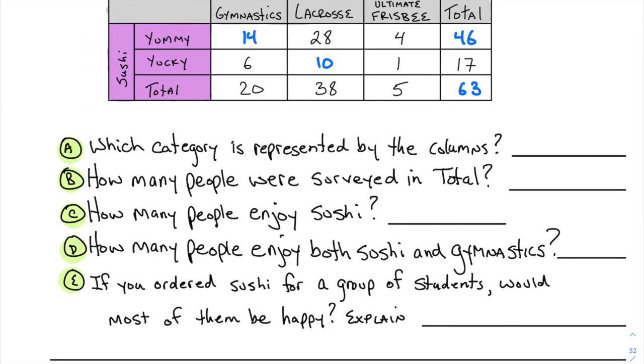Which category is represented by the columns? Columns go up and down, and the up-and-down question lines up with what your favorite sport is. So favorite sport is what goes with the columns.